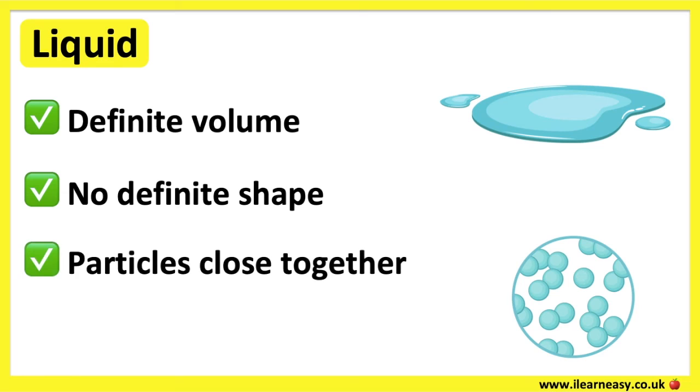Liquids have a definite volume but no definite shape. This is because the particles are close together but they are arranged in a random way. This means that the particles are able to move around each other slightly.